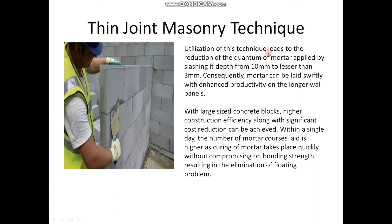The thin-joint masonry technique leads to a reduction in the quantum of mortar applied by slashing its depth from 10 mm to less than 3 mm. Consequently, mortar can be laid swiftly with enhanced productivity on longer wall panels. With large-sized concrete blocks, higher construction efficiency along with significant cost reduction can be achieved. Within a single day, the number of mortar courses laid is higher as curing of mortar takes place quickly without compromising bonding strength, resulting in the elimination of floating problems.